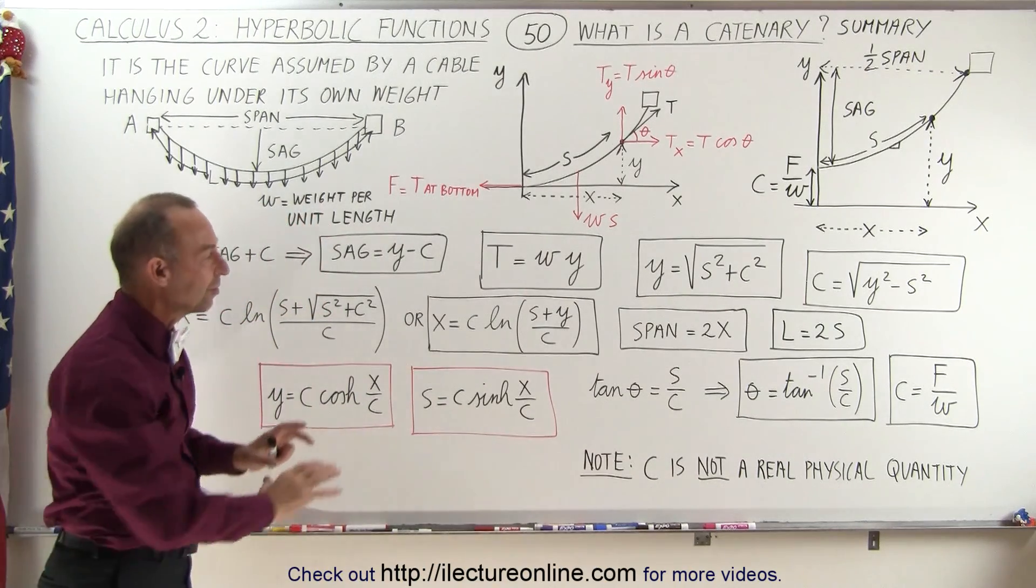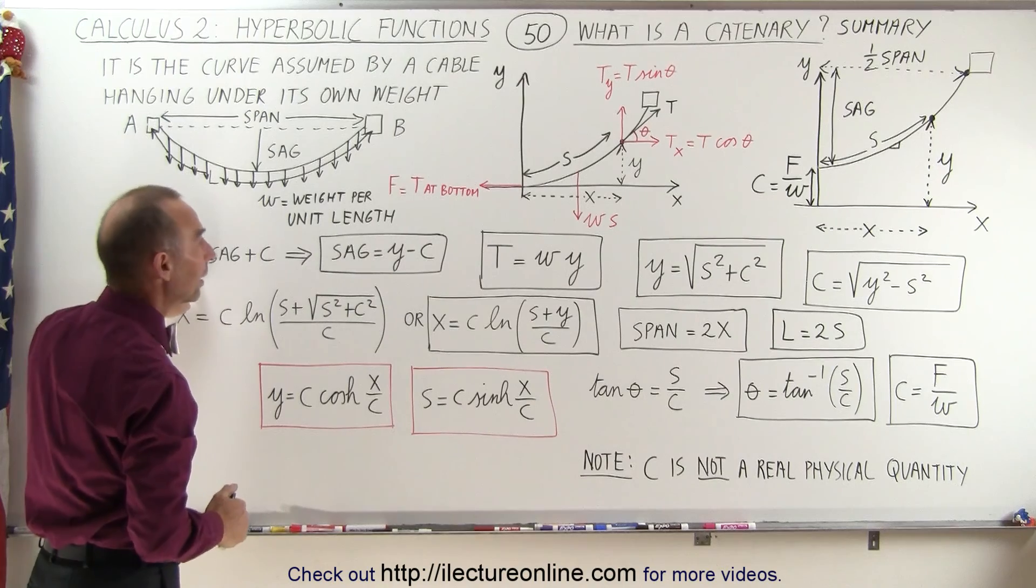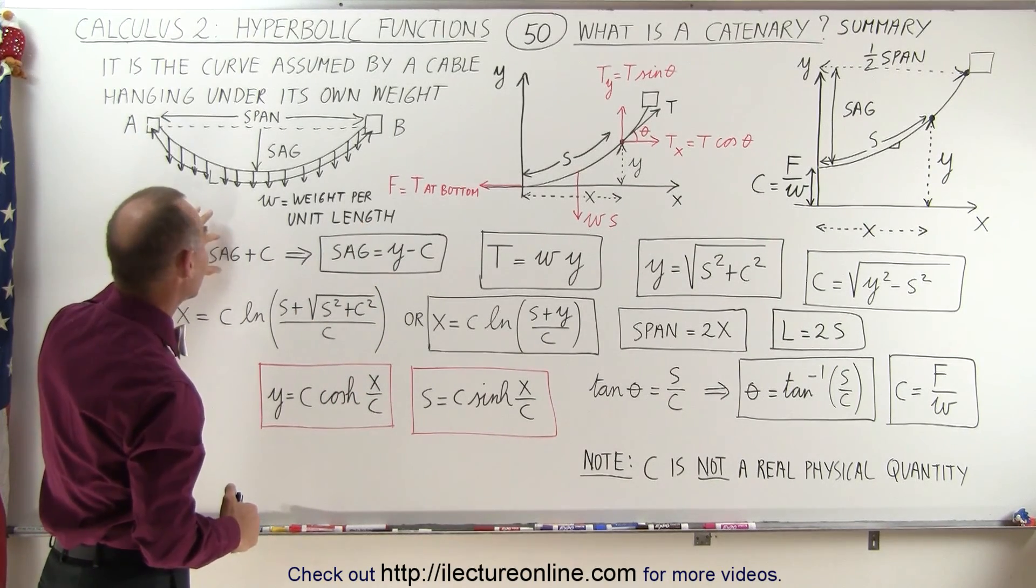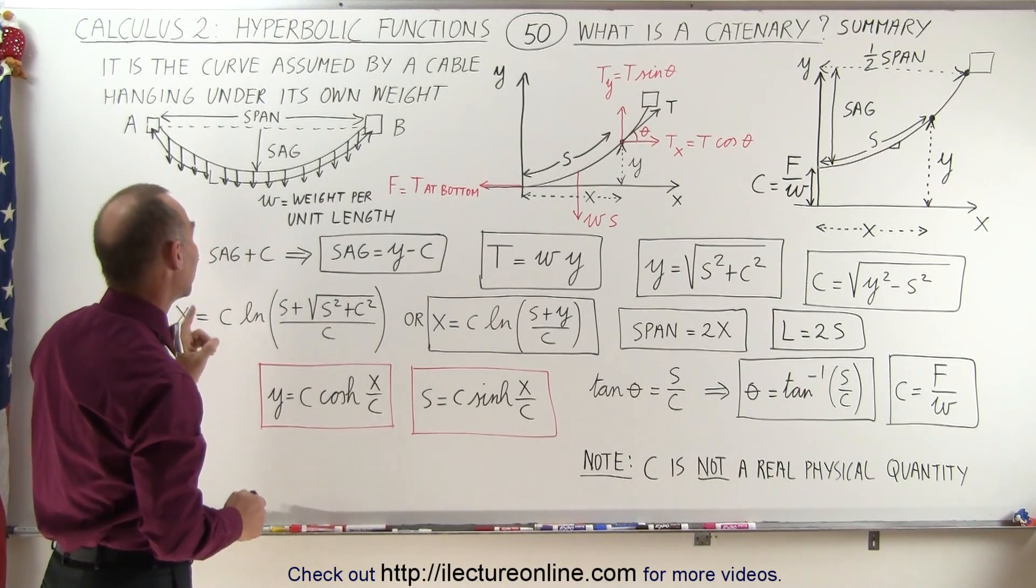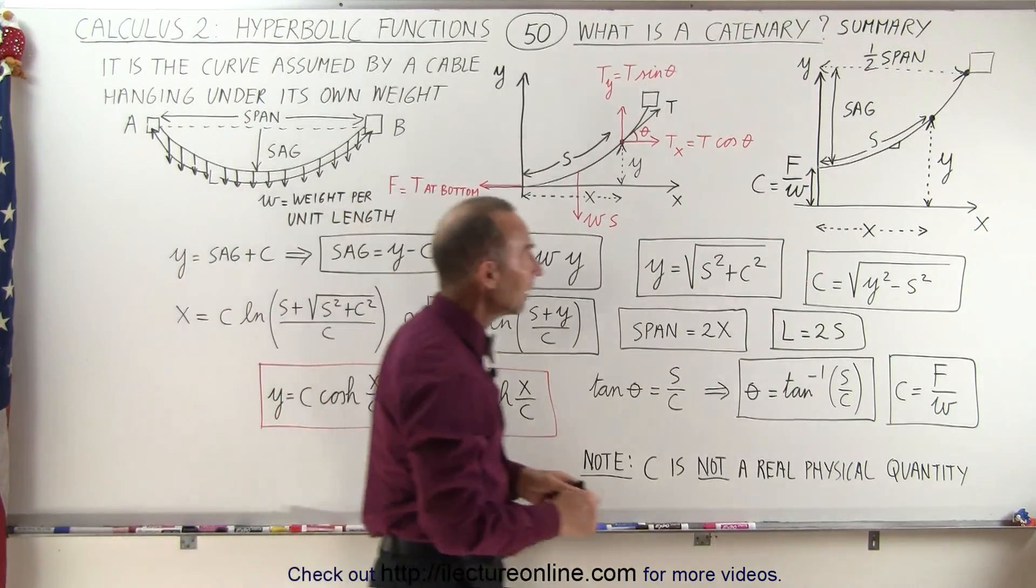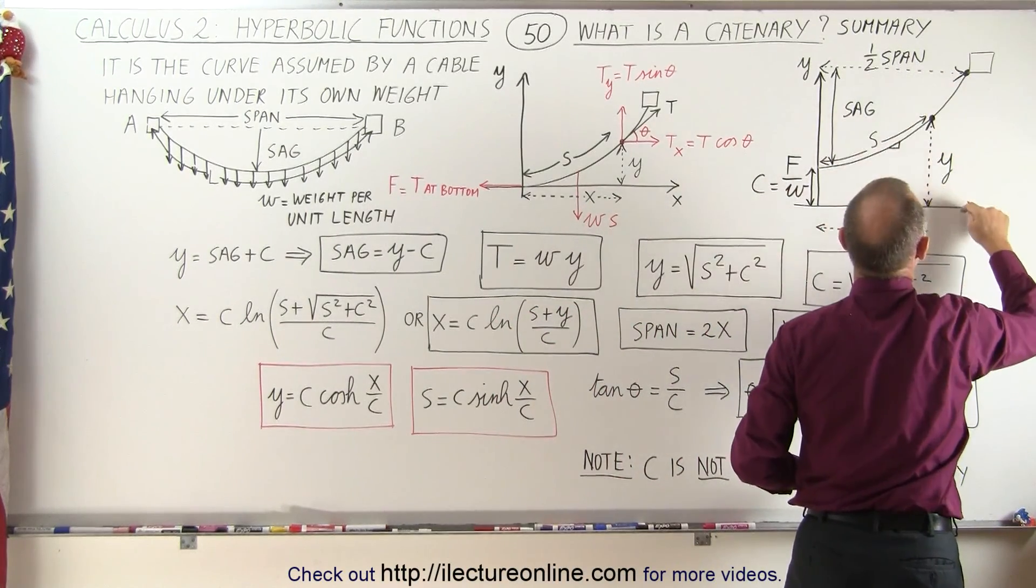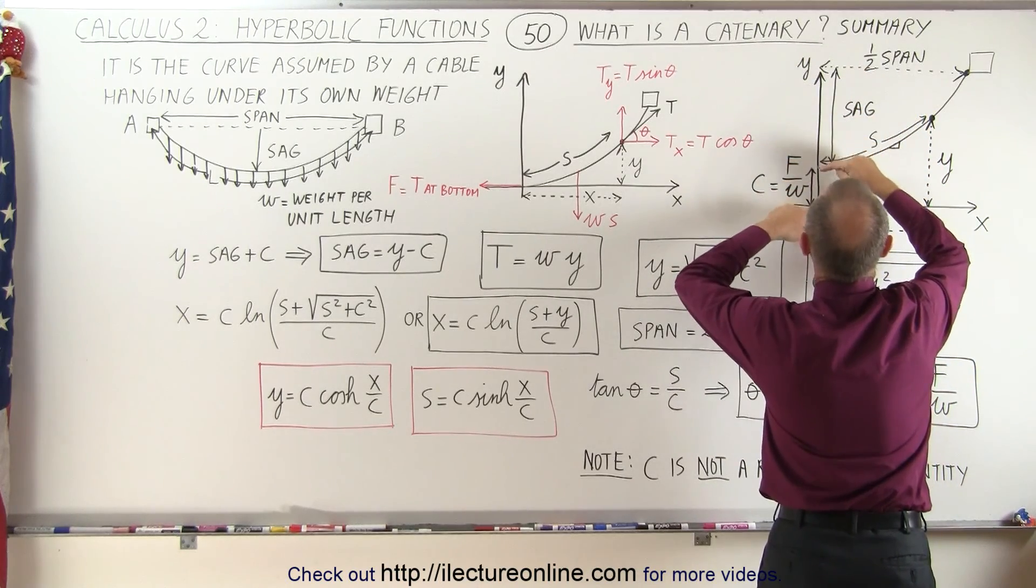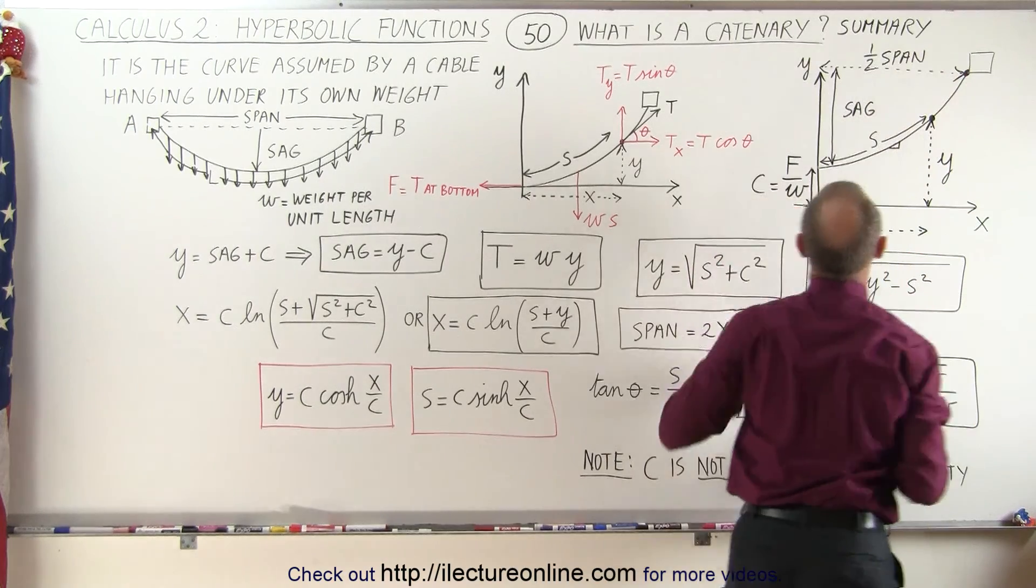Now let's take a look at some of the other equations that pop out from that. First of all, we should realize that y, the distance to any point on the cable, is simply the sum of the sag plus c. Now of course that is true if we're talking about this point right there. So only if we talk about y at b, we take the sag plus c together that will be y when we talk about the point over here.